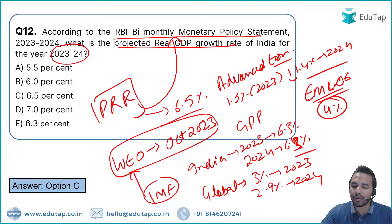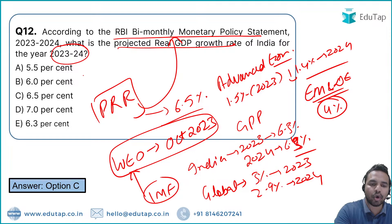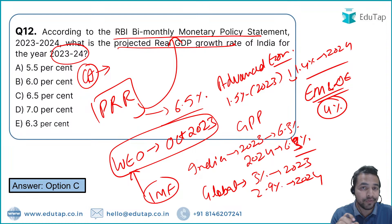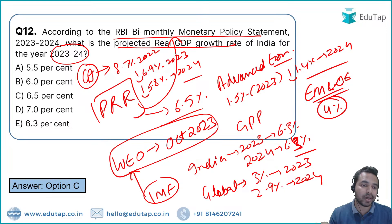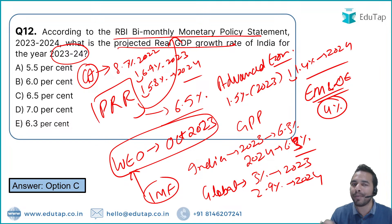Global inflation data from the IMF World Economic Outlook: it was 8.7% in 2022, projected to reduce to 6.9% in 2023, and further to 5.8% in 2024. NABARD Grade exam aspirants must note these values carefully, as they are likely to be asked in the exam.